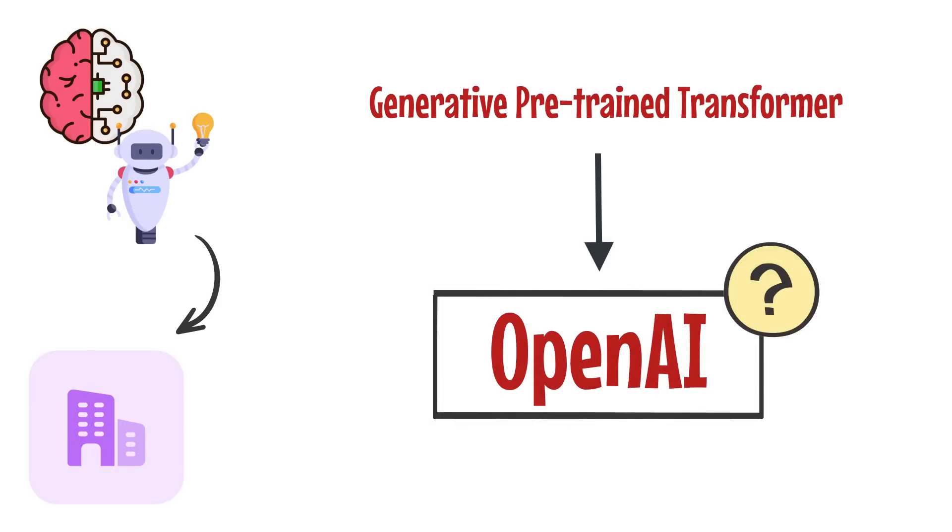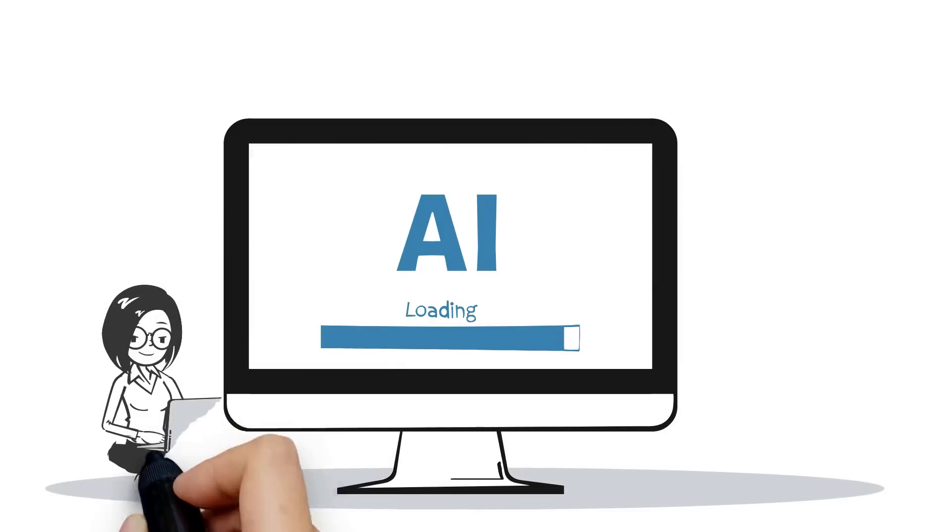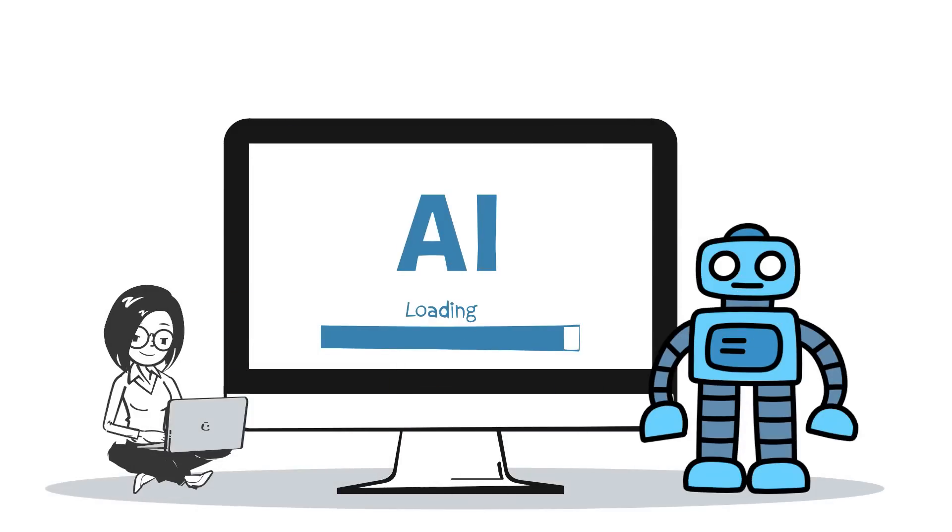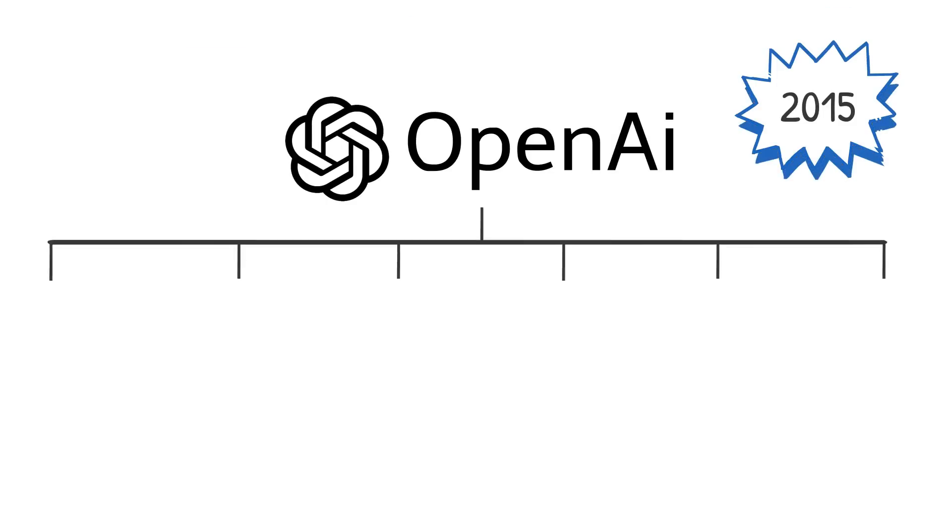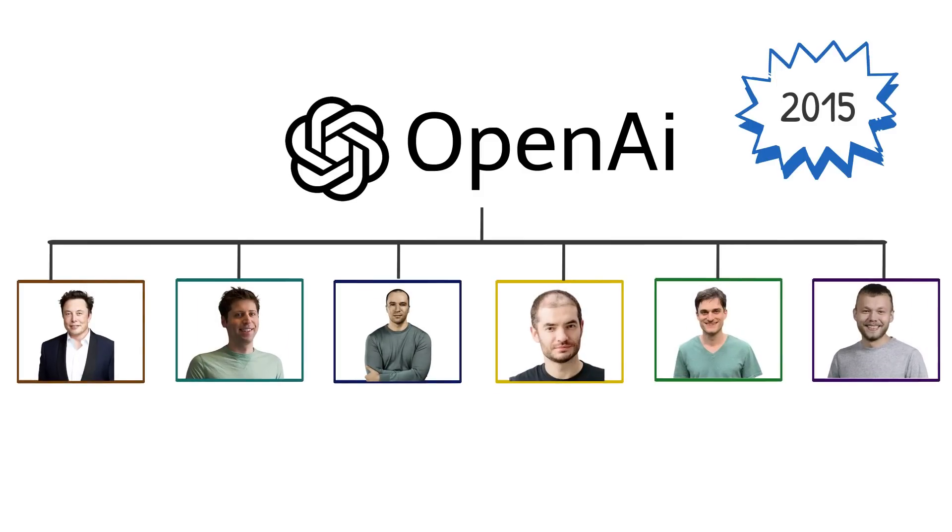You might be thinking, what is OpenAI? Well, OpenAI is a leading research organization in the field of artificial intelligence. OpenAI was founded in 2015 by Elon Musk, Sam Altman, Greg Brockman, Ilya Sutskever, John Schulman, and Wojciech Zaremba.